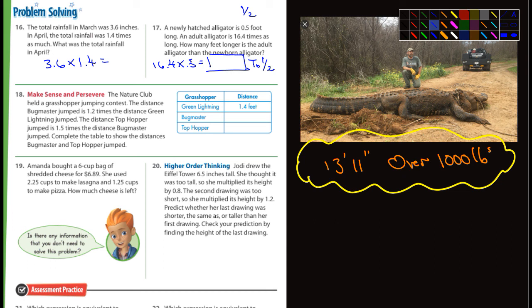Number 18, Nature Club held Grasshopper Jumping Contest. Good luck with that. The distance Bugmaster jumped is 1.2 times the distance Green Lightning jumped. The distance Top Hopper jumped is 1.5 times the distance Bugmaster jumped. Oh my gosh. Complete the table to show the distances. Oh my gosh. Okay. First off, what's the information we got here?